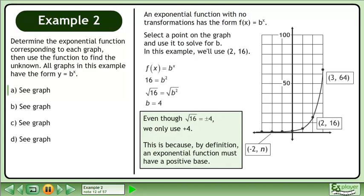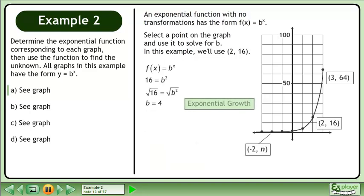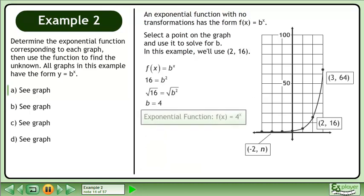Even though the square root of 16 equals positive or negative 4, we only use positive 4. This is because, by definition, an exponential function must have a positive base. Since b is greater than 1, we have exponential growth.